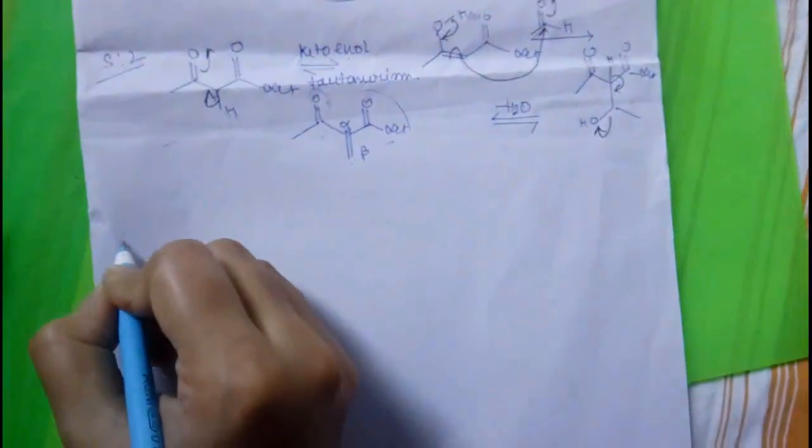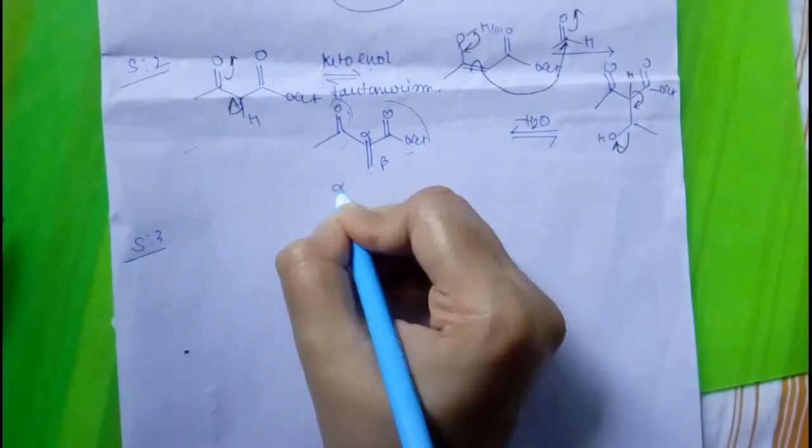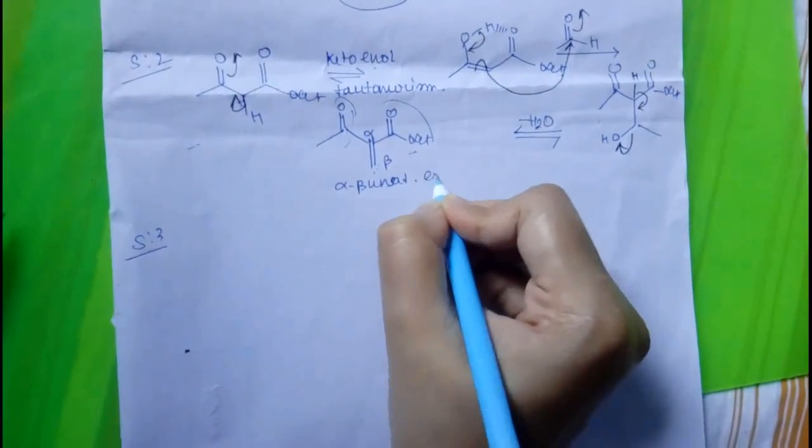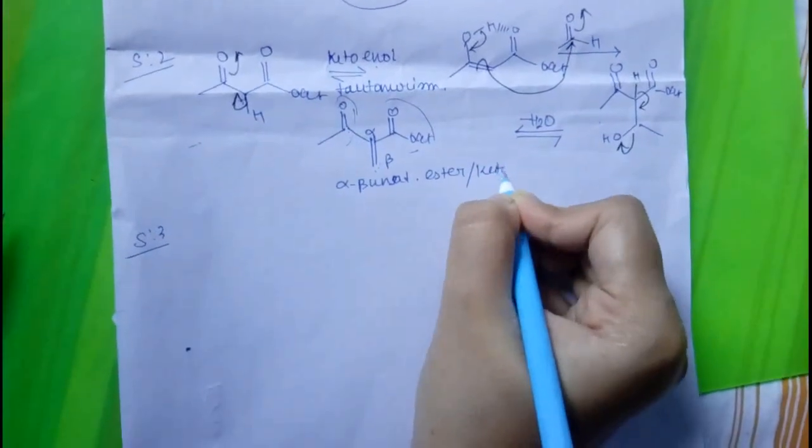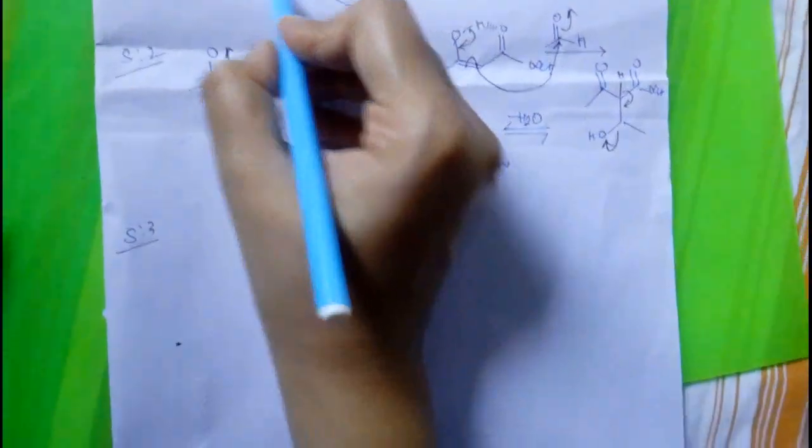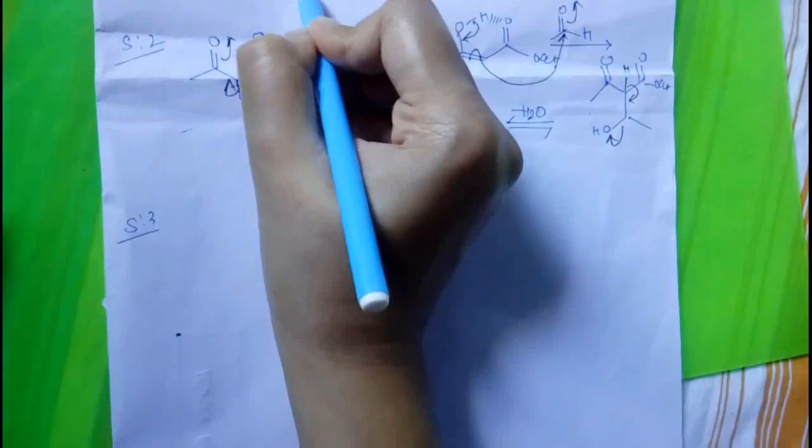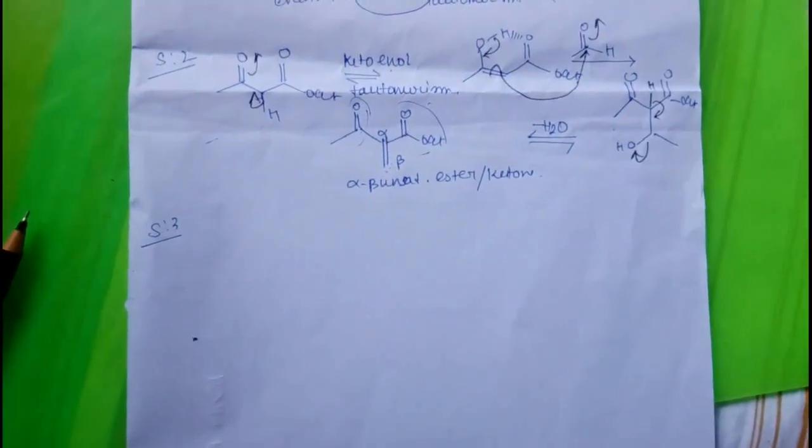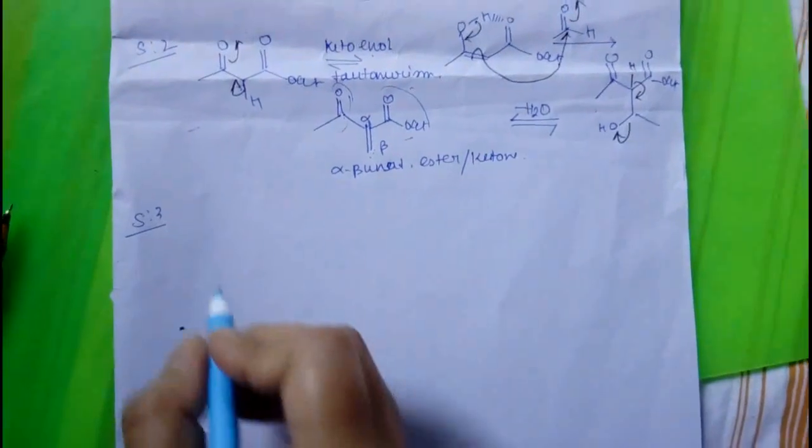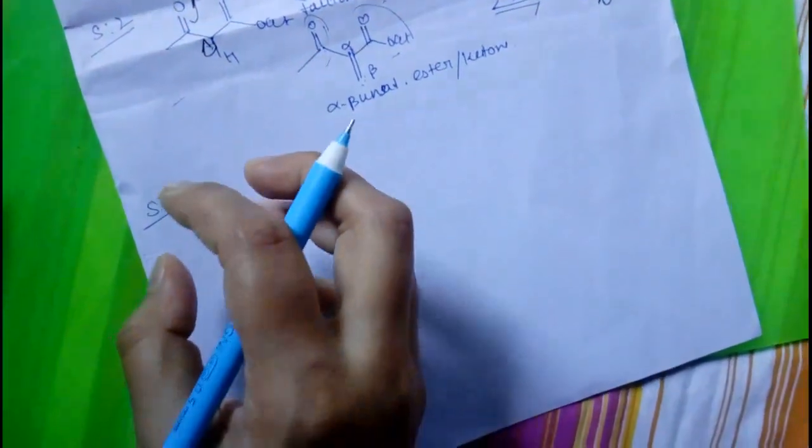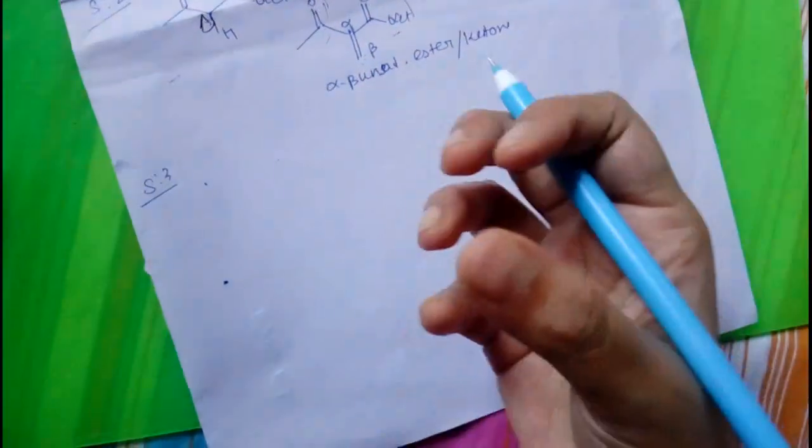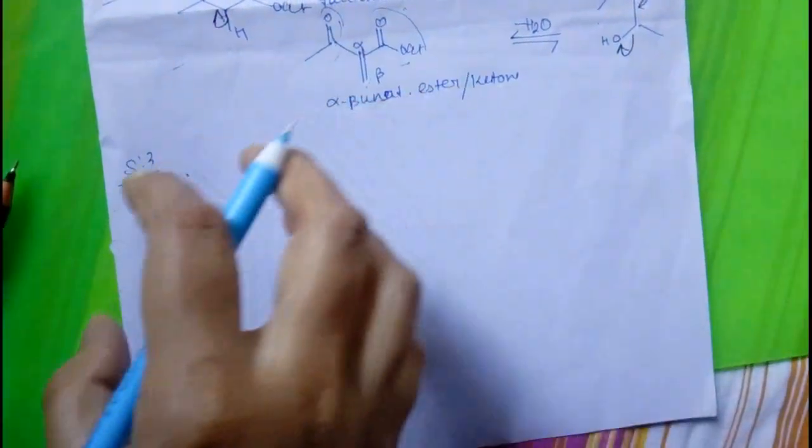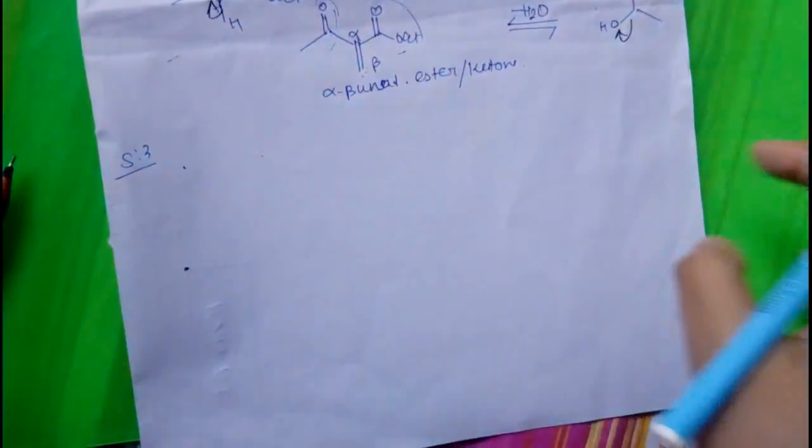In step 3, this alpha-beta unsaturated ester or ketone and this enamine will undergo a sigmatropic rearrangement. What is sigmatropic rearrangement? Sigmatropic rearrangement means the rearrangement of sigma bond. By rearrangement of sigma bond, the compound will form.